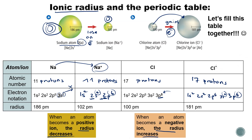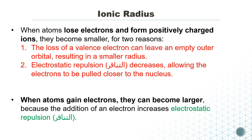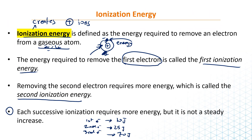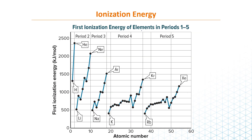Ionization energy creates positive ions. If you remember from Part 1, if we lose or remove an electron we create a positive ion. So ionization energy is the energy required to create a positive ion or remove an electron. This figure shows the atomic number on the x-axis and the first ionization energy in kilojoules per mole — this is the first ionization energy of elements in periods one to five.